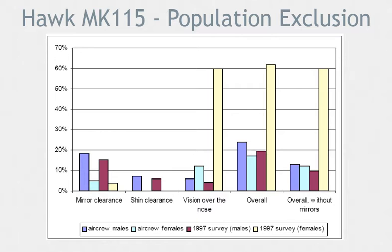You can see this clearly in the cockpit accommodation assessment of the HAWC. With this chart, three critical exclusion factors are examined: mirror clearance, which is whether the person will hit the mirrors during an ejection; shin clearance, which is whether the person is able to place their feet on the rudder pedals without interference of their shins with the main instrument panel; and vision over the nose, which equates to 14.8 degrees from horizontal with the aircraft on the ground.